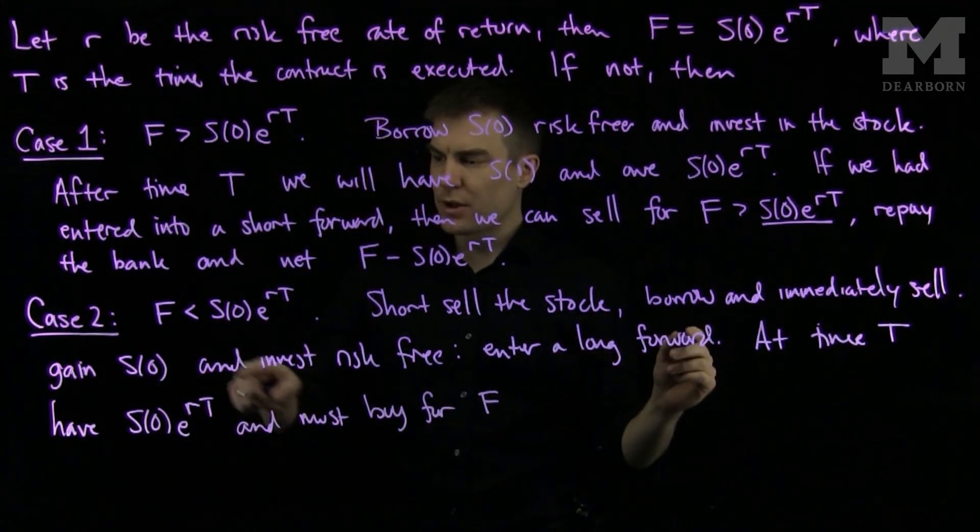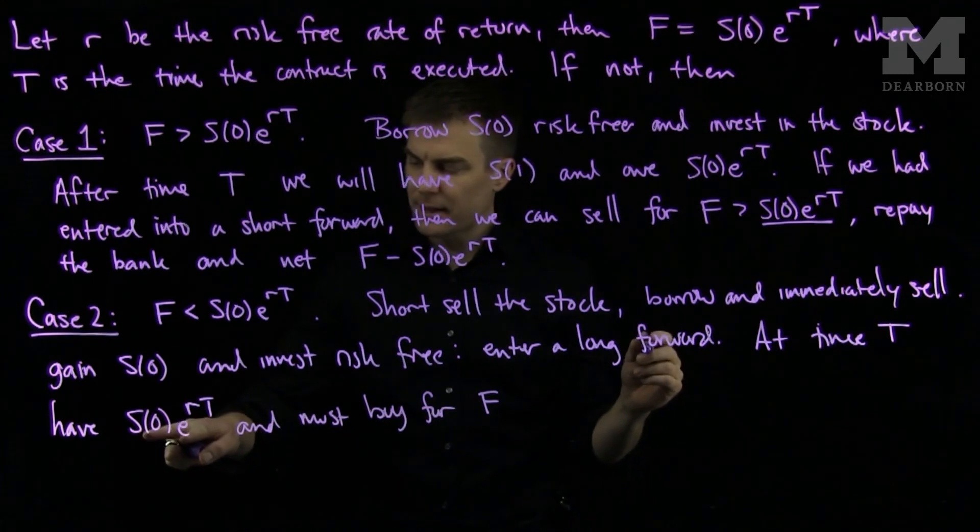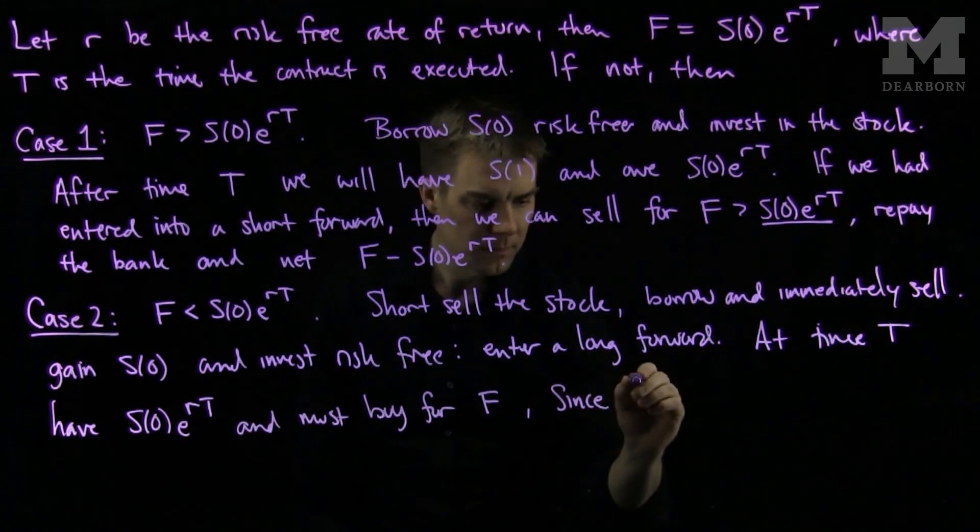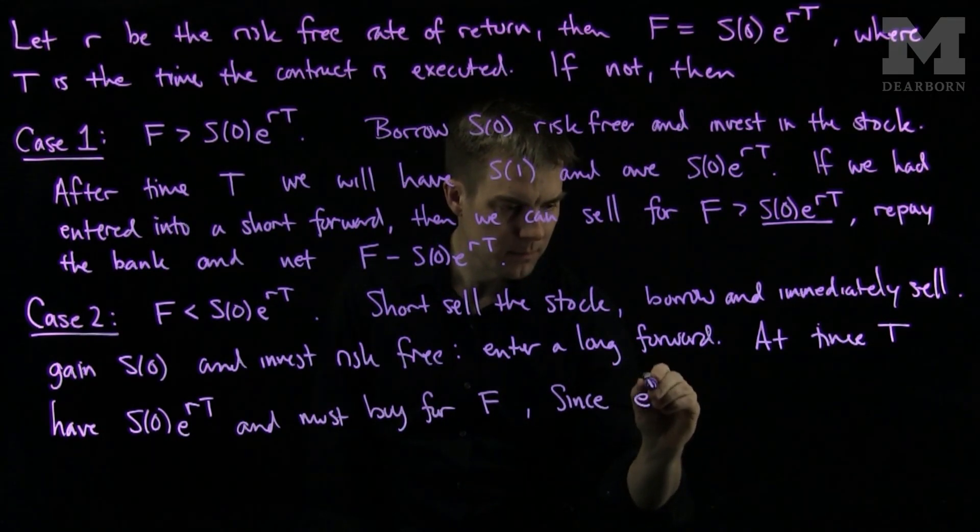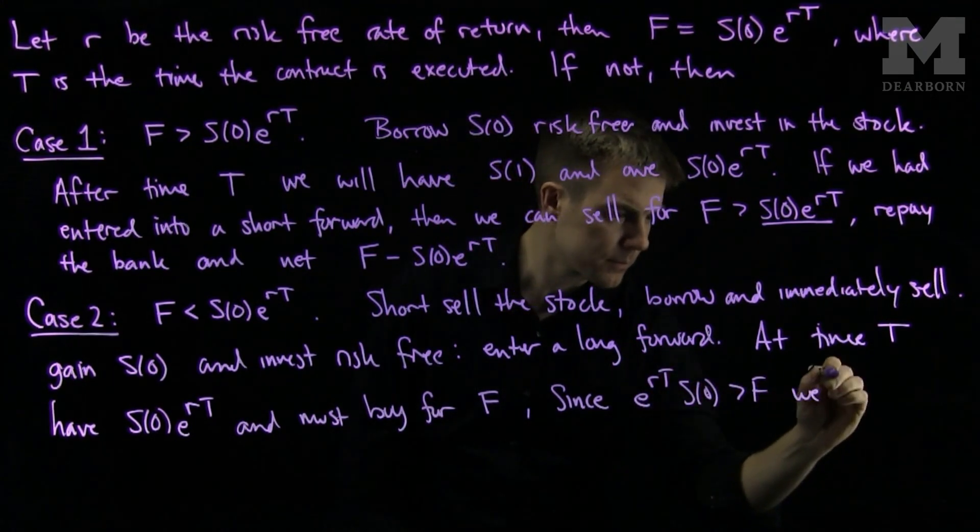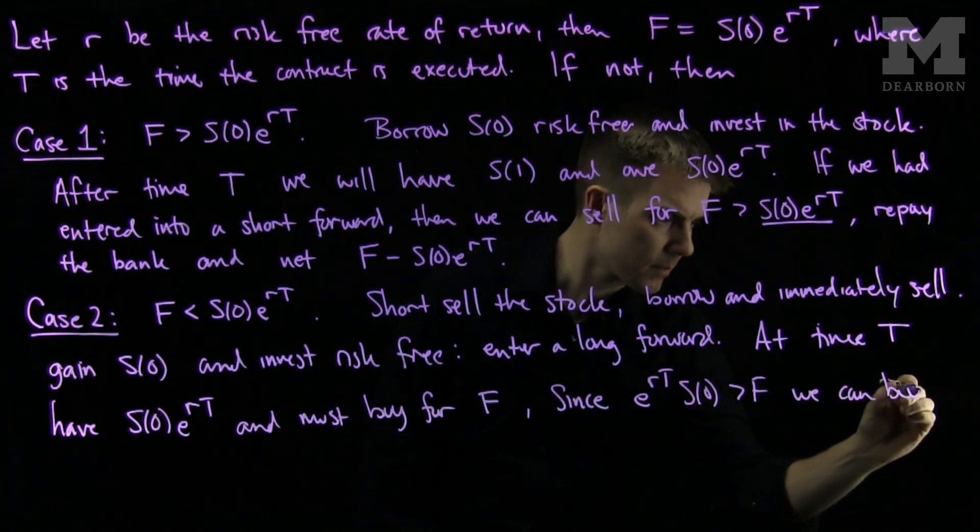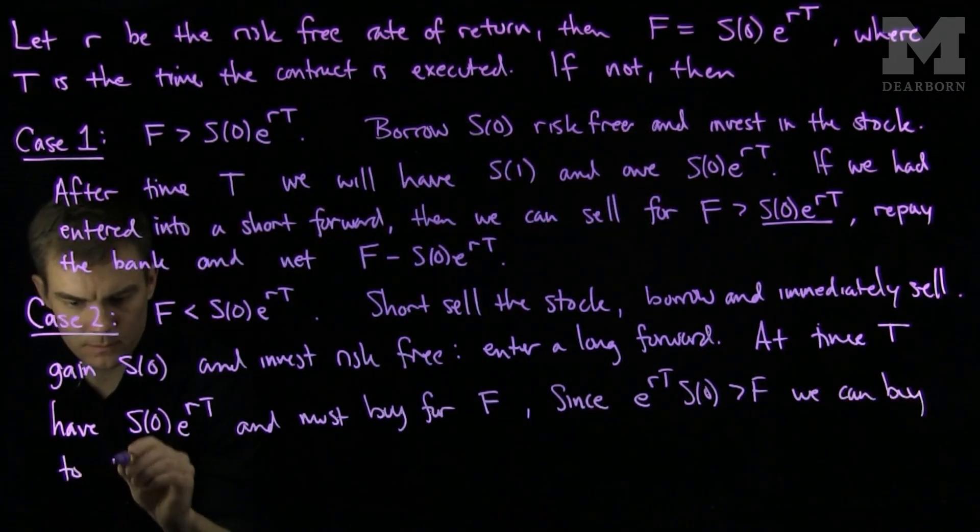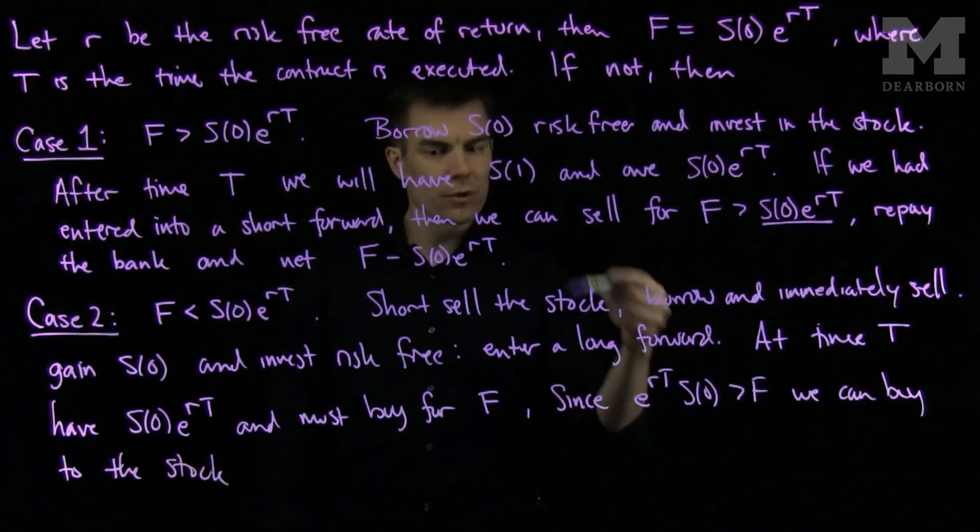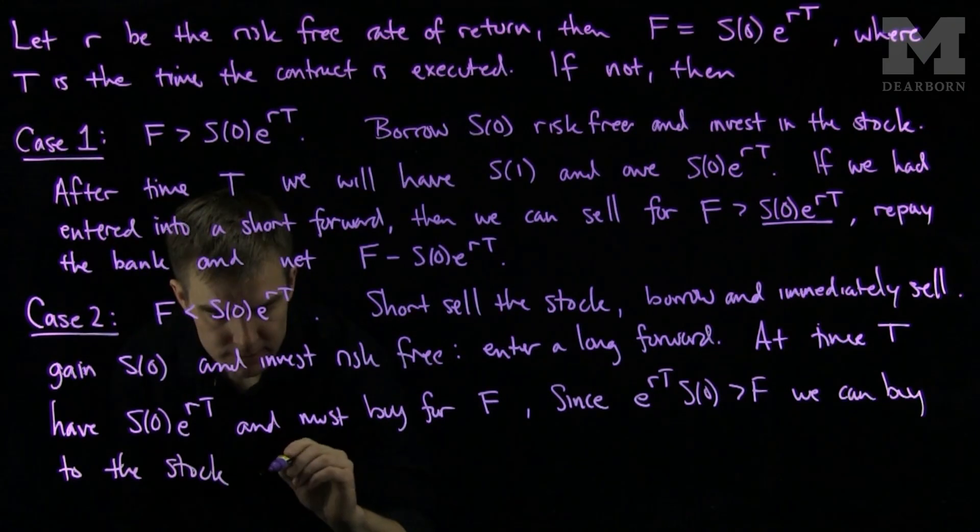But, as S0 times e to the RT is larger than F, I have at least that much money. We buy the stock, return it since we short sold it, and gain